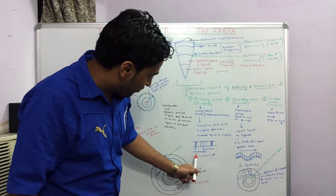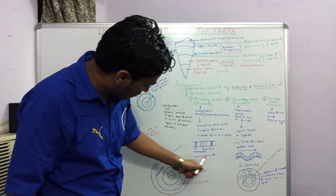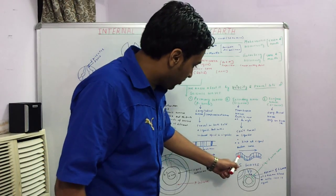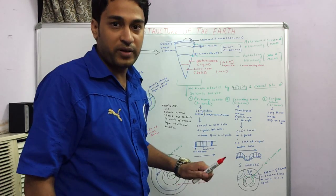They travel in the form of compressions and dilations. We can see this in the diagram also. This is the path of the movement of the wave. Whereas the S waves can travel only in solids. They cannot travel in liquids.